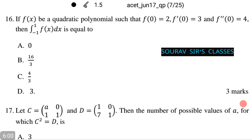In the next question, we have if f(x) be a quadratic polynomial such that f(0) equals 2 and f'(0) equals 3 and f''(0) equals 4, then the definite integral of f(x) ranging from minus 1 to 1 dx is equal to among the following options.